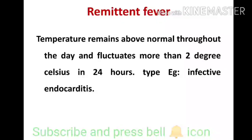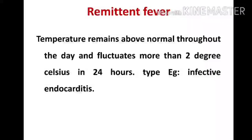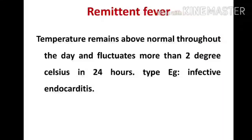The next type is remittent fever. Here the temperature remains above normal throughout the day, similar to constant fever, but it fluctuates more than two degrees Celsius in 24 hours. For constant fever the fluctuation was not more than two degrees Celsius, whereas here it is more than two degrees Celsius. Remittent fever is seen in infective endocarditis.